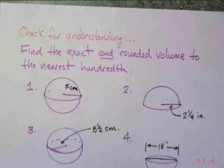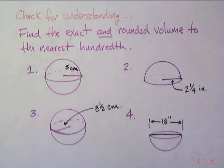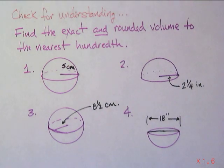Oh, here you go. Not a problem today. I give you four pieces. One with a sphere with a radius of five centimeters. Two, a hemisphere with a radius of two and a quarter inches. Be careful. Three, a sphere with eight and a half inches as a radius. And four, a hemisphere with a diameter of 18 inches.